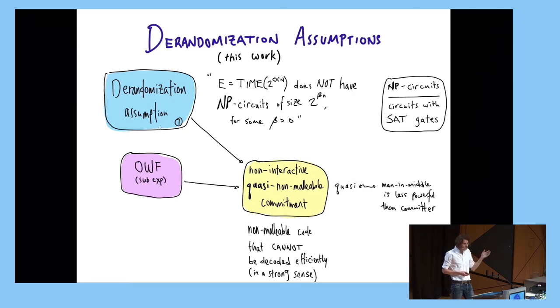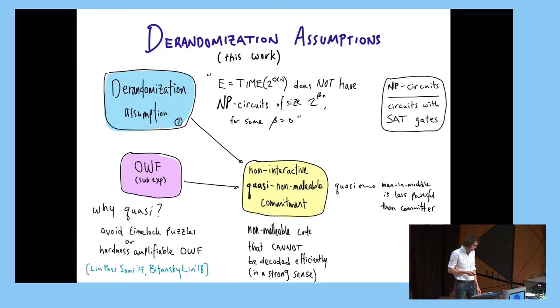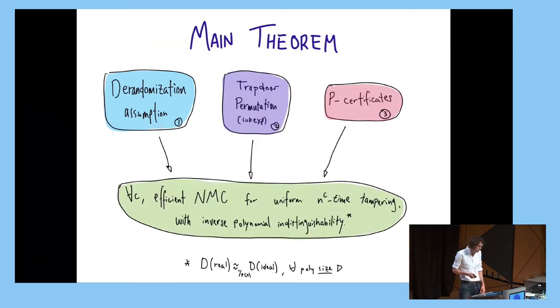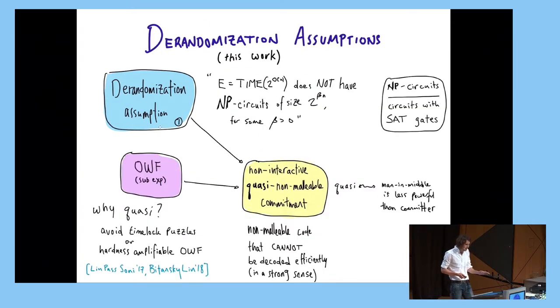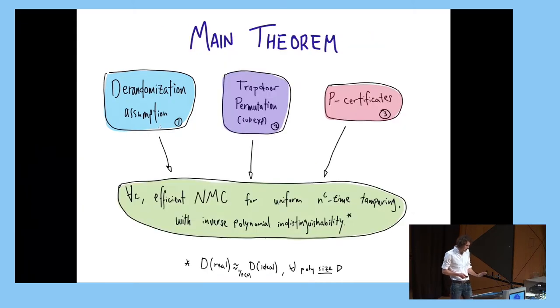But for those that are in the know, quasi-here, this is a standard non-interactive non-malleable commitment except that we're restricting the adversary in this way that's consistent with what I've been talking about. The man in the middle is going to be less powerful than the committer and the receiver. And why are we considering this relaxed notion? Basically because we already have too many assumptions. We don't want to avoid time-lock puzzles or hardness amplifiable one-way functions. But returning to our main result, if I have time I'll say something about this, but I probably won't. So, returning to our main result, how do we prove this theorem?